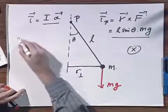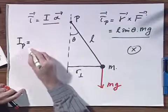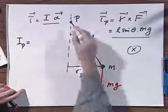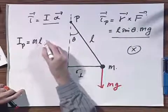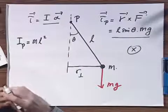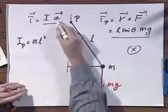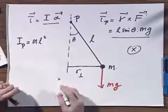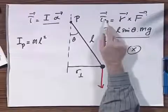Now, this torque also equals Iα. And I relative to point P is totally trivial. That is ML squared. That's the definition of moment of inertia. And alpha is θ double dot.